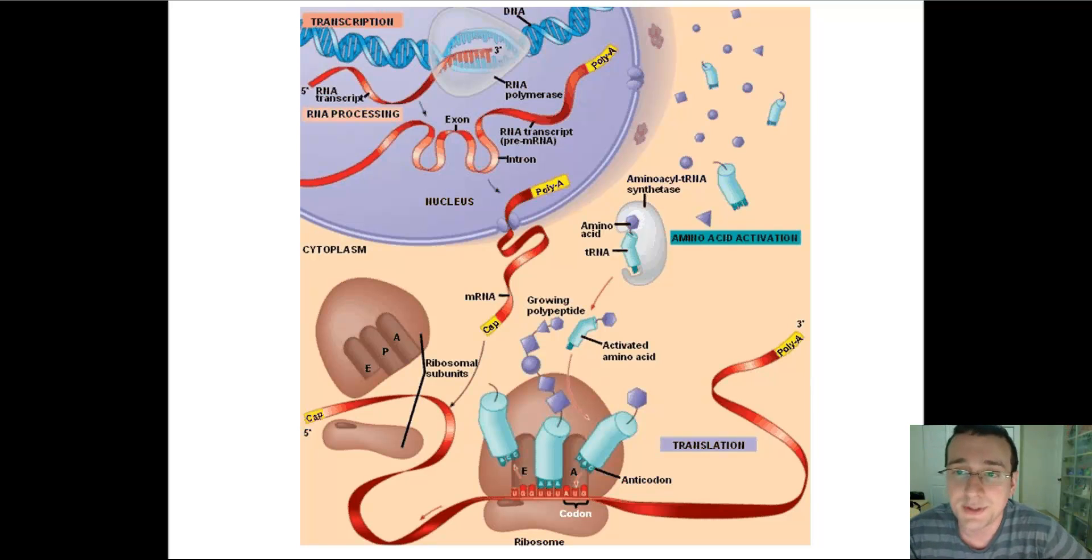Then there, an SRP receptor will allow the SRP to connect to it, allowing the ribosome to attach itself to the surface of the rough ER. From that point on, the protein will be made into a pore, allowing the protein to be trapped inside the lumen of the rough ER, where it will be changed and then sent into the Golgi apparatus for packaging and exportation outside of the cell.